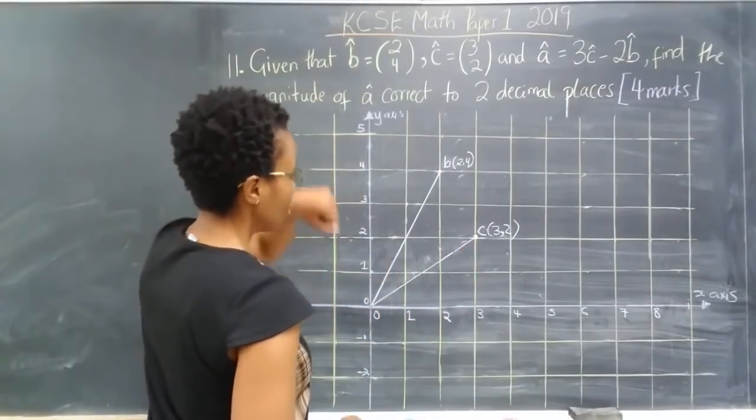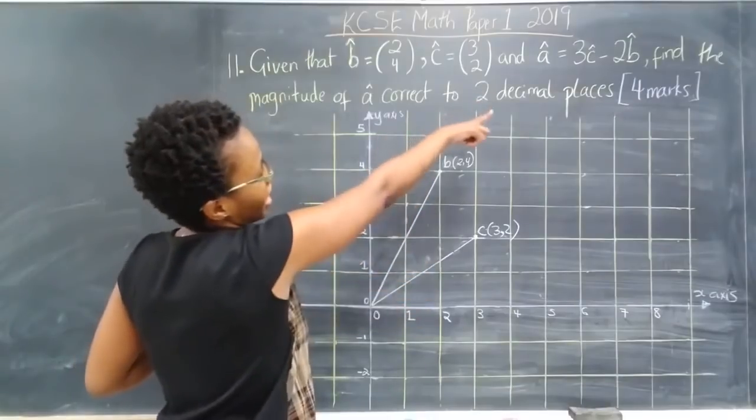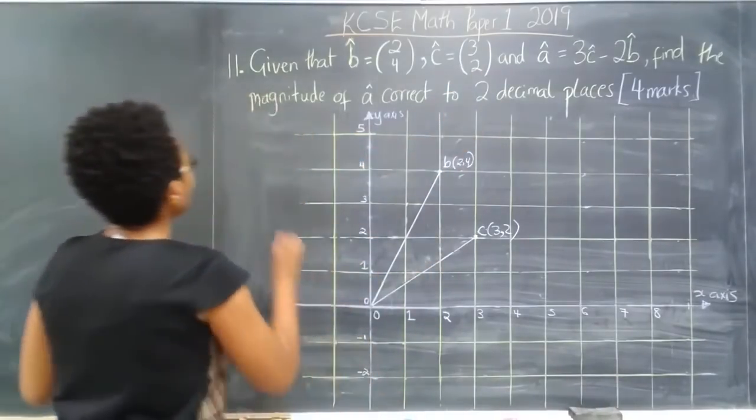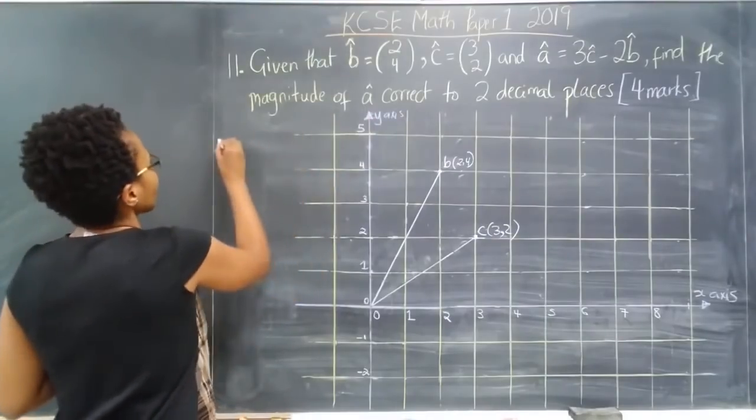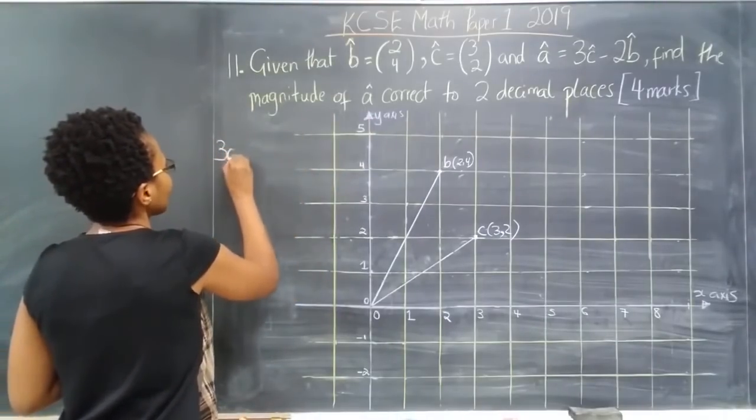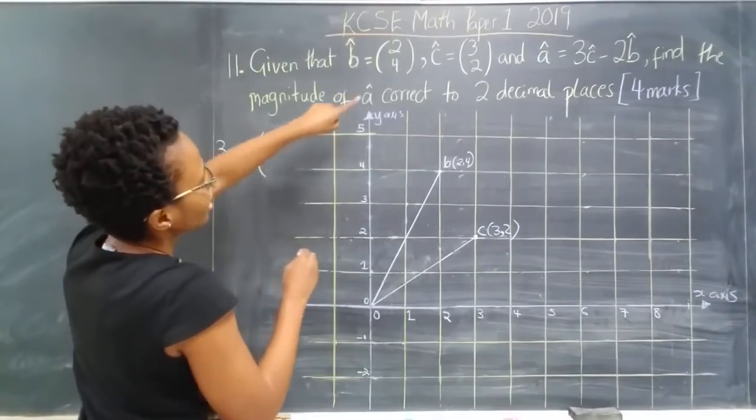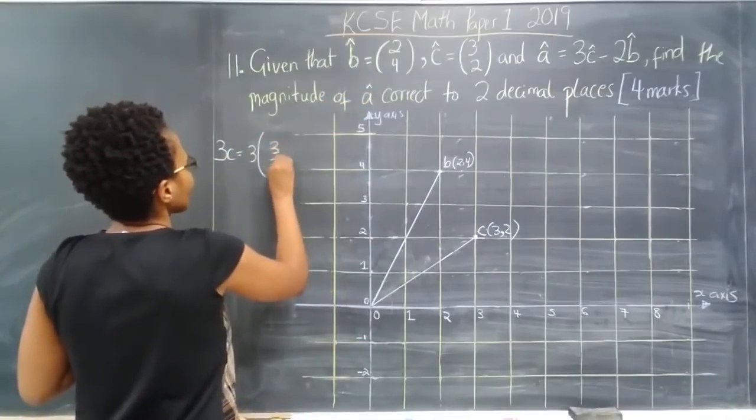But now what they want us to do is find the vector A, which is equal to 3 times C. So we need to first find out what 3 times C is. 3 times C is 3 times (3, 2), so that's the coordinates.